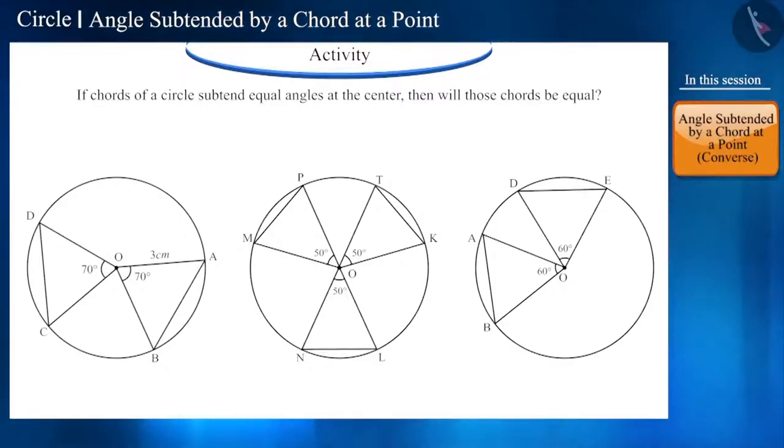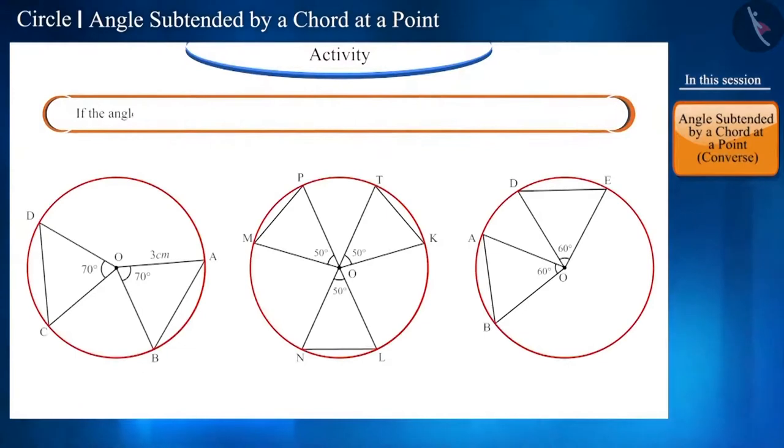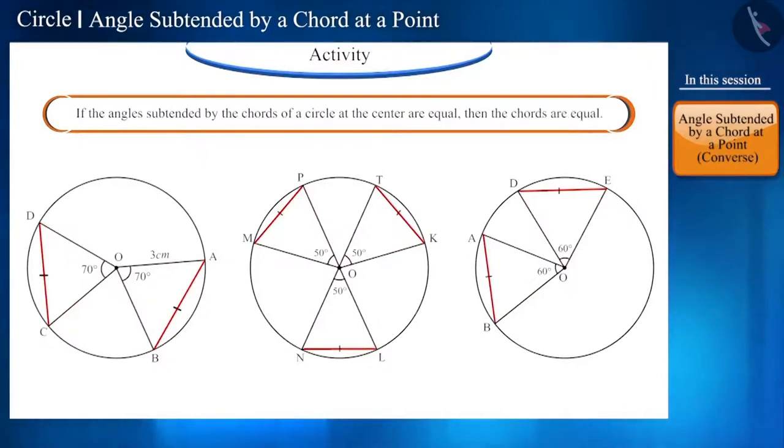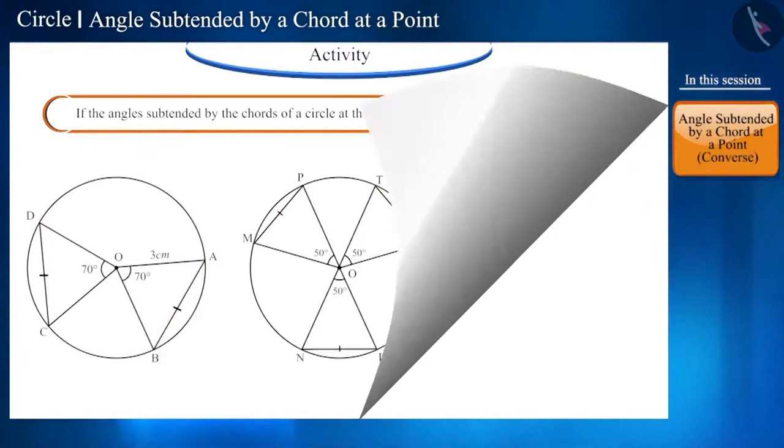Friends, you will come to the conclusion that if the angles subtended by the chords of a circle at the center are equal, then the chords are equal. Now, let us prove it mathematically with the help of a statement.